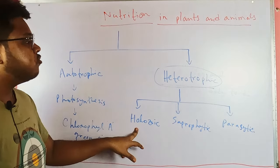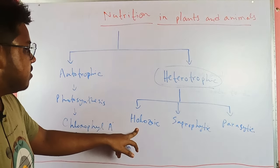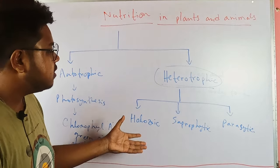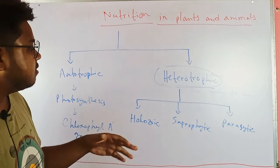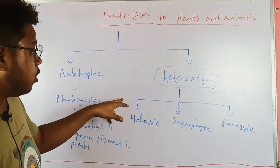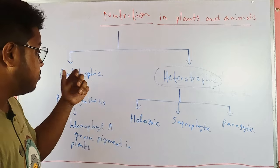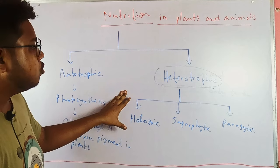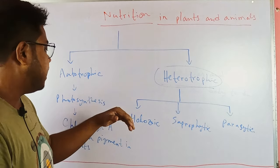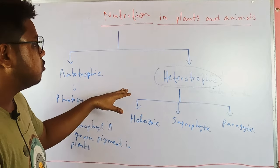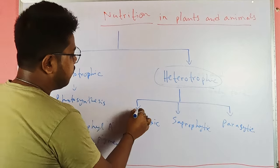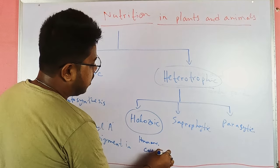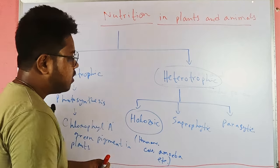Holozoic nutrition is where organisms absorb particular food materials within their cells, break those food materials by oxidative respiration, and then assimilate that food to generate ATP or energy. This involves organisms like humans, cows, and amoeba.